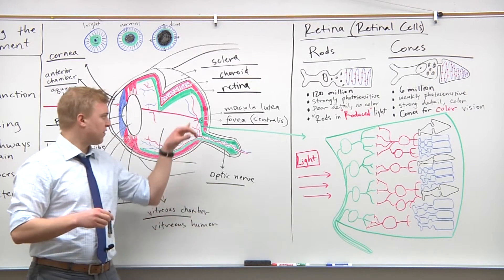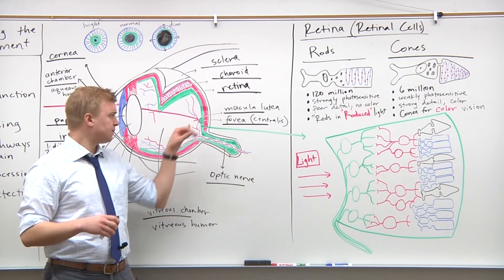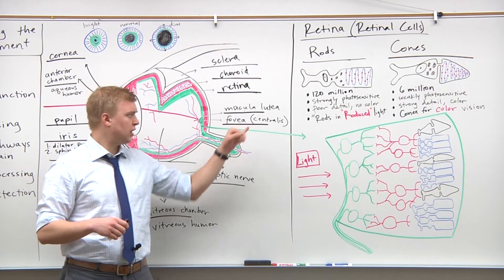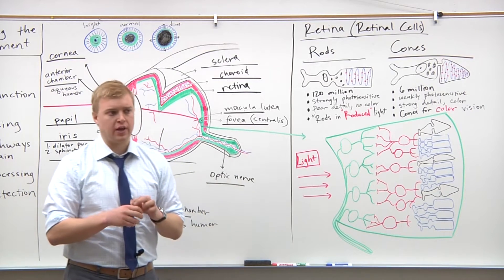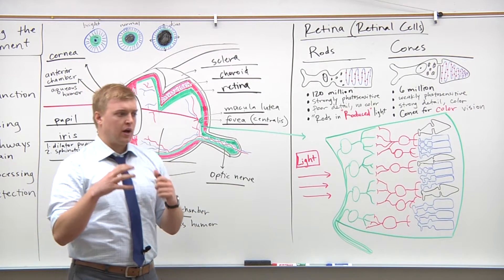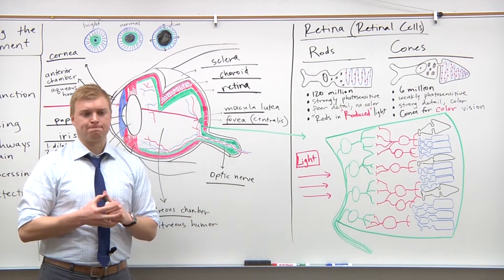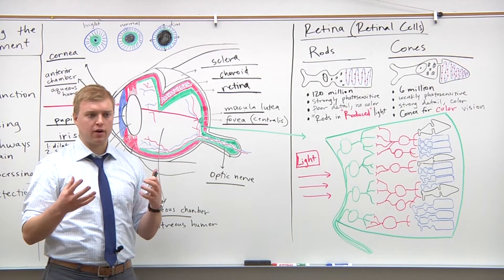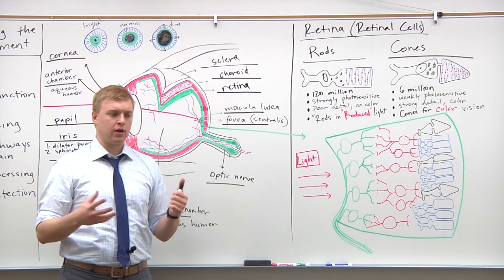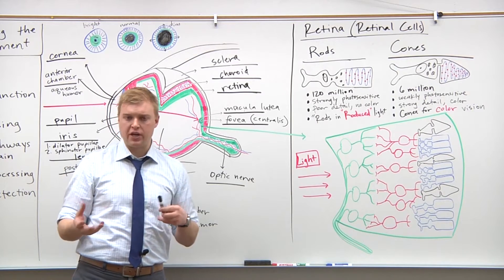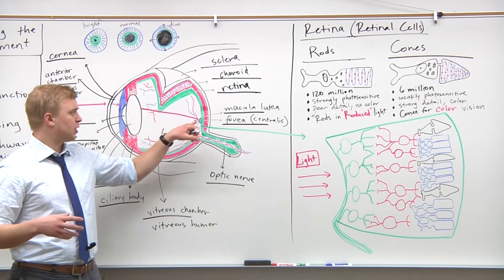This is where you're going to have the best visual acuity. But then right here at the fovea centralis, you have pretty much all cones, and this is where you have the actual best visual acuity. This is where the really cool phenomenon of visual accommodation happens when you look at something really bright.